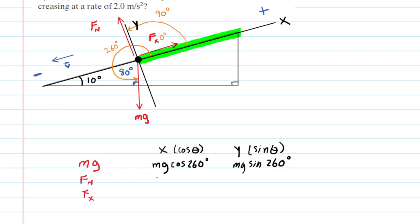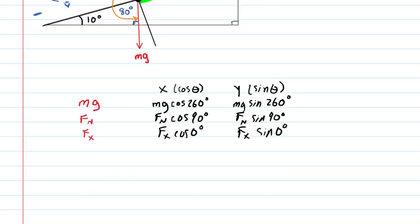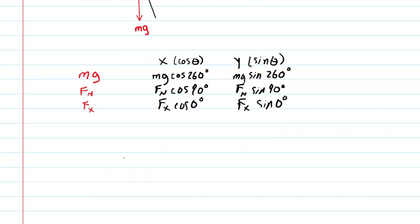For f sub n at 90 degrees: the x-component is f_n times cosine of 90 degrees, and the y-component is f_n times sine of 90 degrees. For f sub x at zero degrees: the x-component is f_x times cosine of zero degrees, and the y-component is f_x times sine of zero degrees. Next, we apply Newton's second law in both the x and y directions separately.